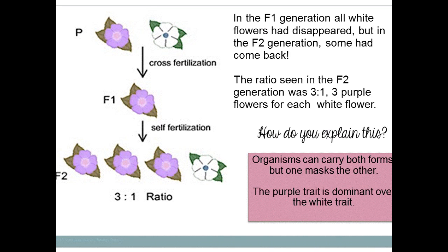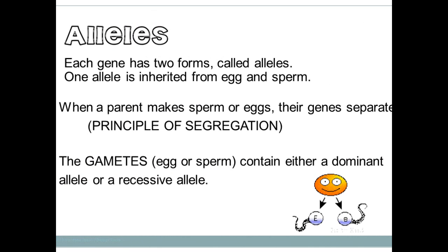When you write out these alleles, dominant alleles are always written as capital letters — dominant is the winner, so it's bigger. Recessive alleles are always written as lowercase letters. For example, tall pea plants are dominant to short pea plants. If you use the letter T, tall is written as a capital T and short is written as a lowercase t. Each individual carries two alleles, or two letters.